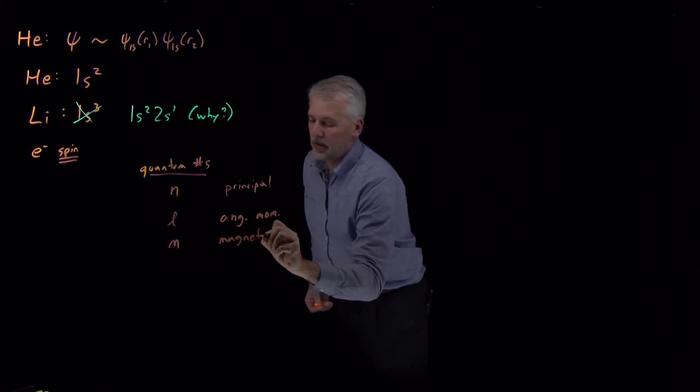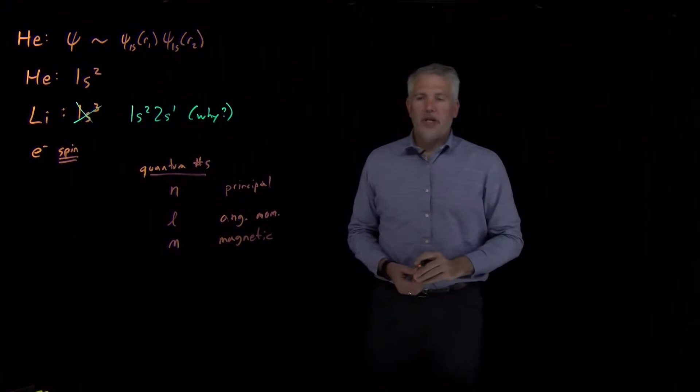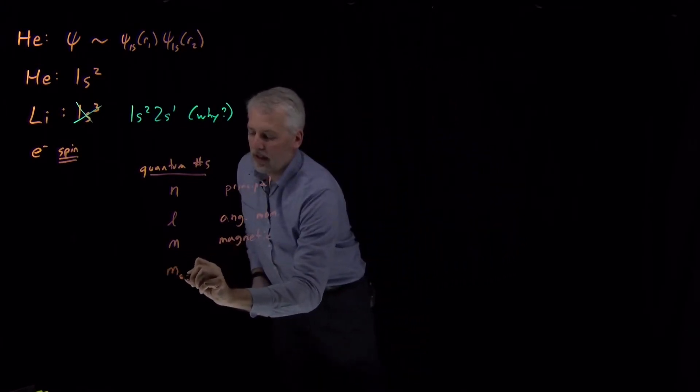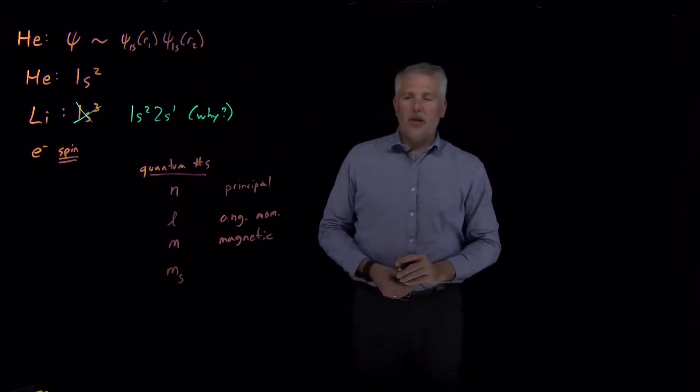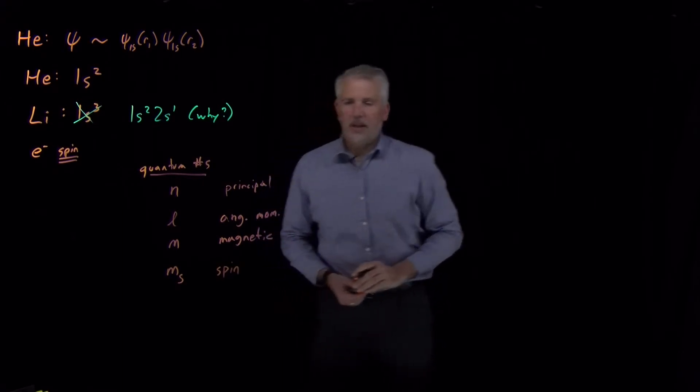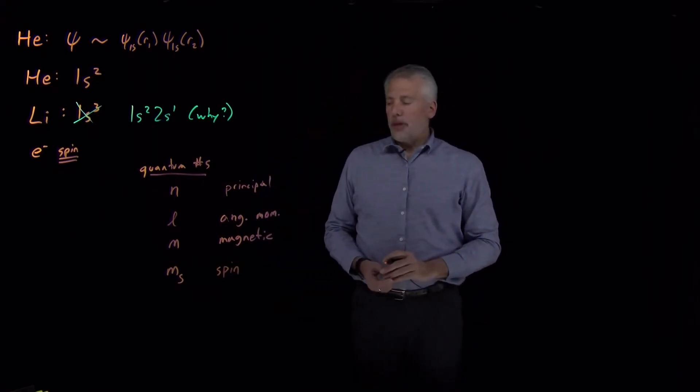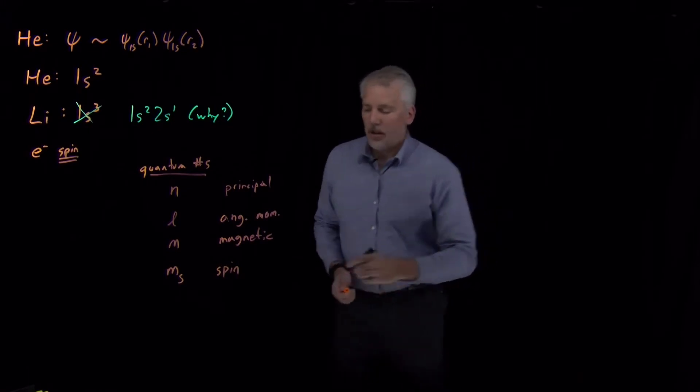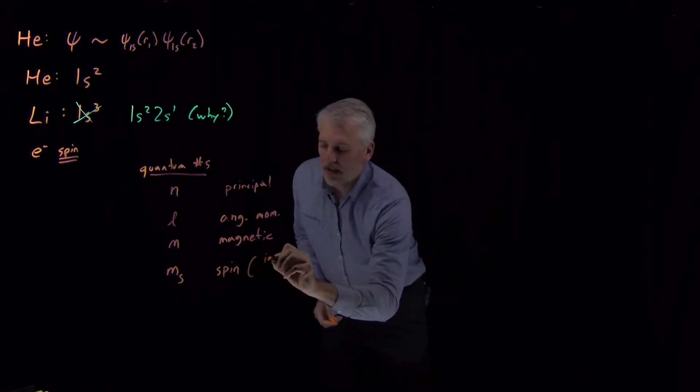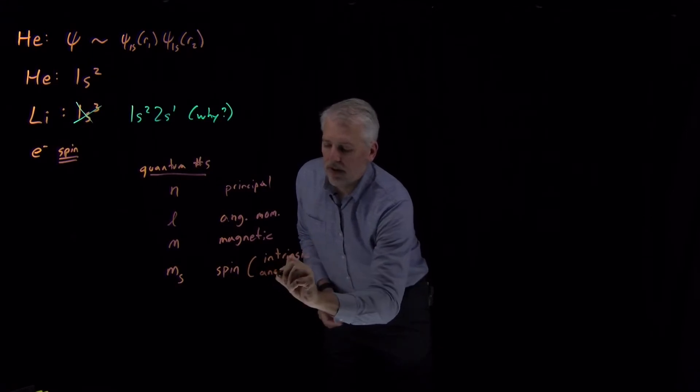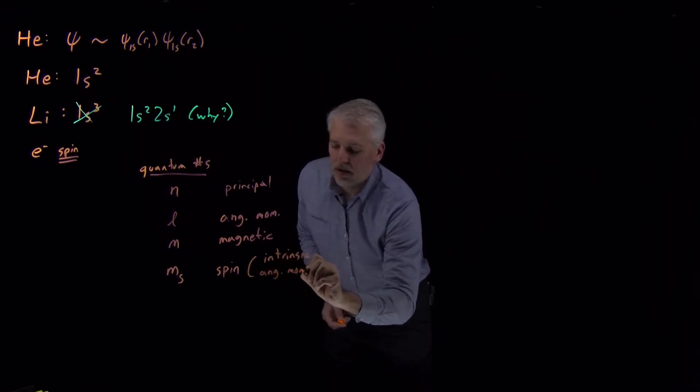Turns out there's a fourth quantum number that we haven't talked about so far. We're going to call that m_s, and that's the spin quantum number. What we mean by spin of an electron—it's another flavor of angular momentum. We call this the intrinsic angular momentum of the electron.